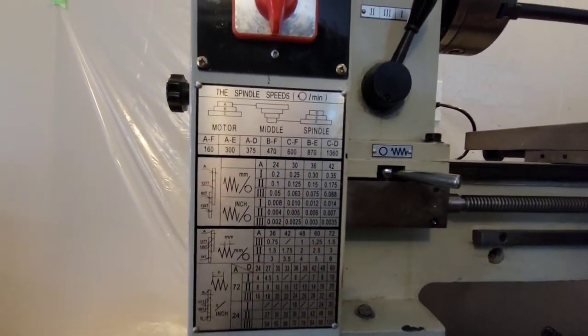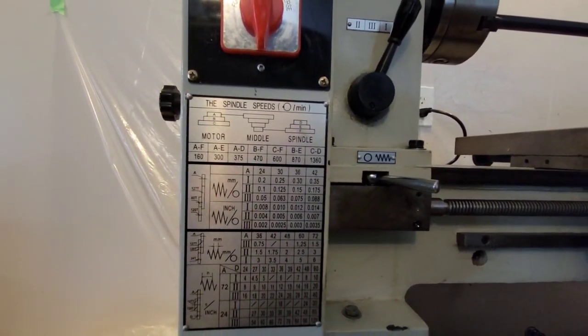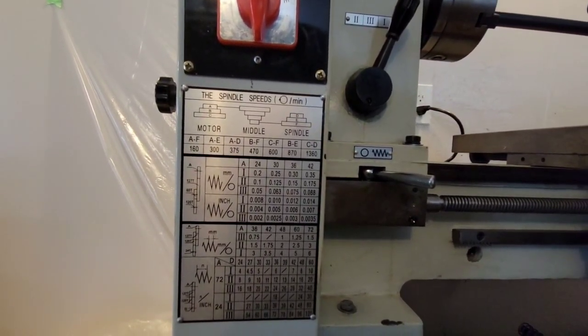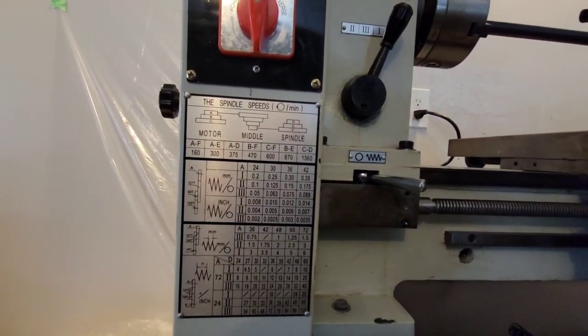Here's the table with the different lathe speeds and the threading table, which threads you can do. So this machine can do metric and inch threads.